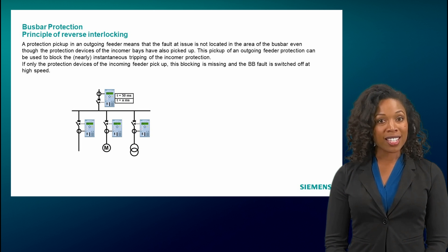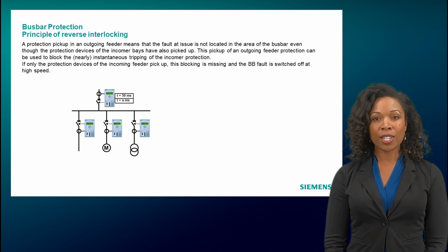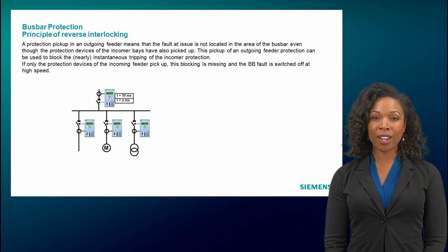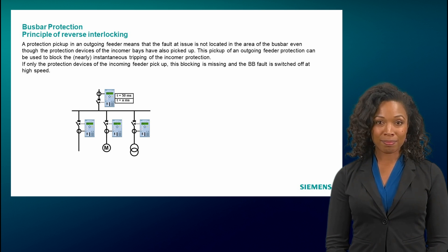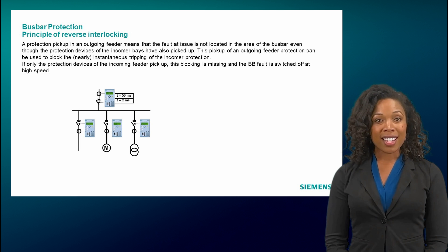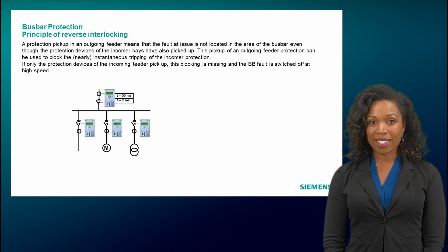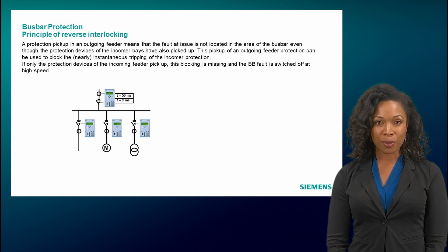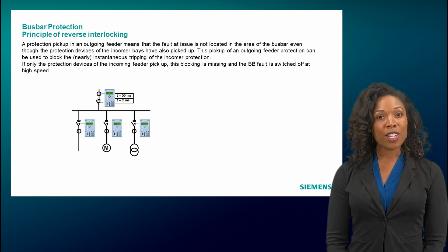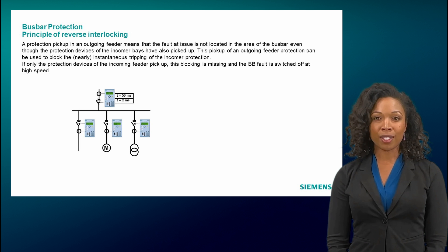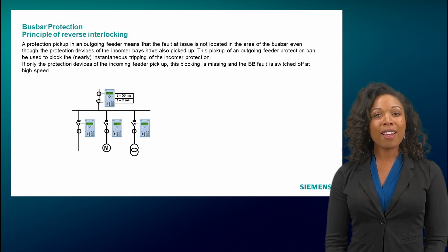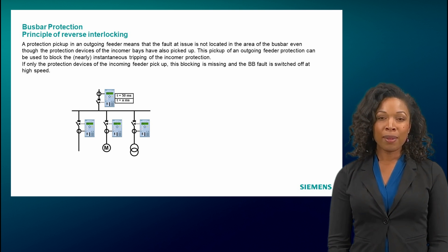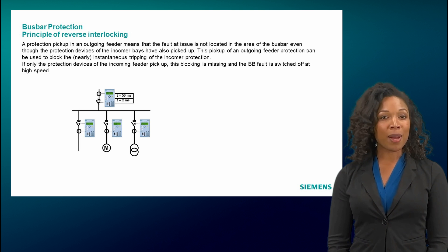The principle of a reverse interlocking system can be explained very well by the switchgear shown. First of all, we assume that the incomer feeder shown above is the only feed-in, and all outgoing feeders below are consumers. In this constellation, the protection device in the incomer feeder has two tasks. First, the device forms the backup protection for the protection devices in the outgoing feeder — for example, a fault in the feeder is recognized by the feeder protection, but the tripping must be set to a delay so that the feeder protection has the chance to clear the fault selectively. Second, the device represents the busbar protection and must trip as quickly as possible in the event of a busbar fault.